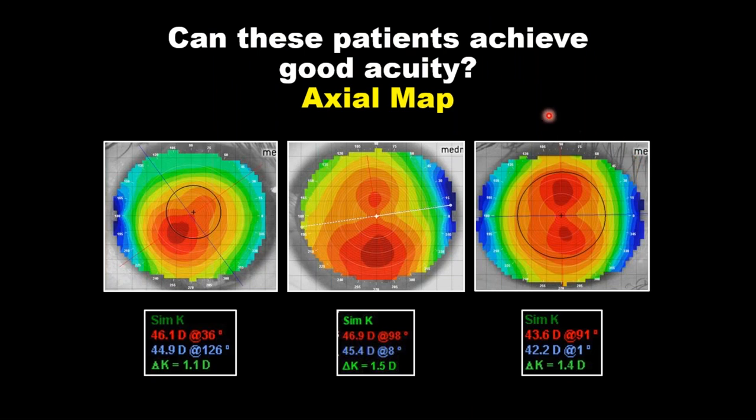One of those interpretations is called the axial map, and the axial map is how you interpret the power of the cornea. This applies to any type of topography — the axial map is a power map, marking the power of that cornea in each area.